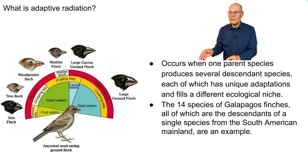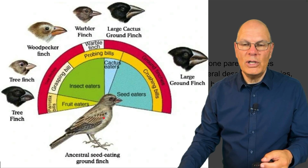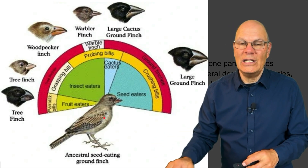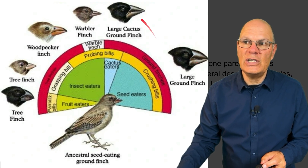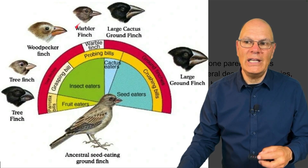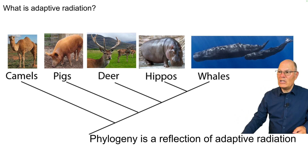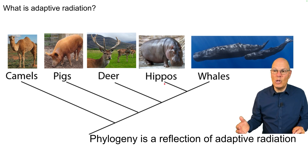The 14 species of Galapagos finches shown here, all descendants of a single South American species, are an example. This one species arrived at the Galapagos Islands and then radiated into a whole variety of descendants, each with different features and a different ecological niche. Phylogeny is a reflection of adaptive radiation — each of the different branches shows splitting from a common ancestor, which is adaptive radiation on a very large scale.